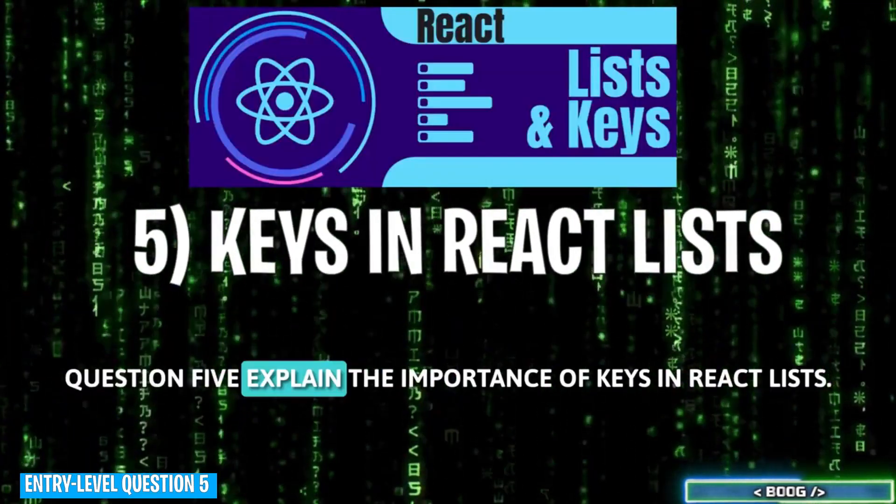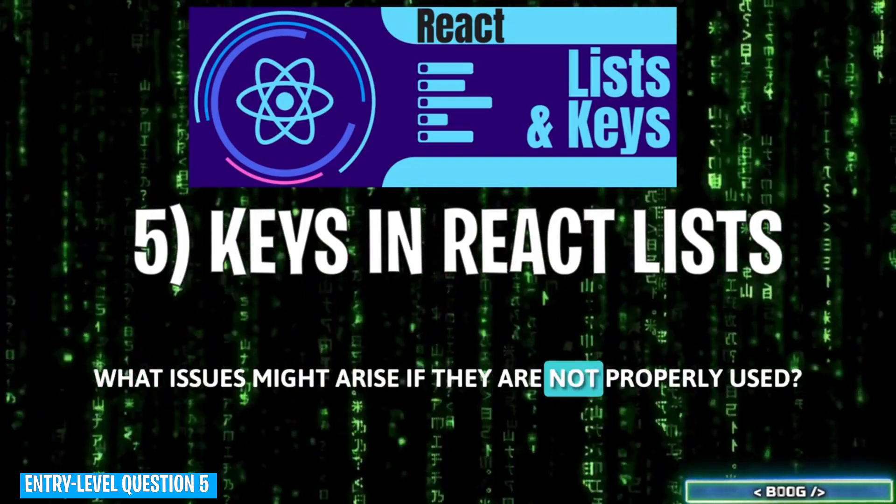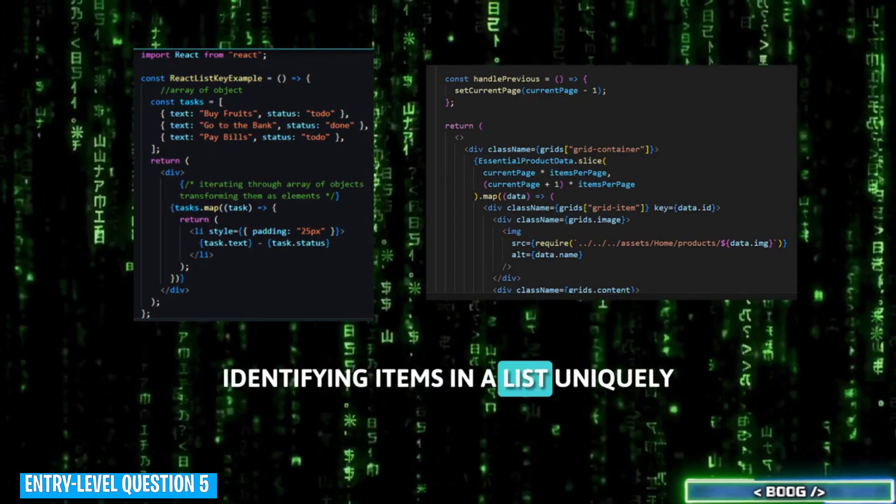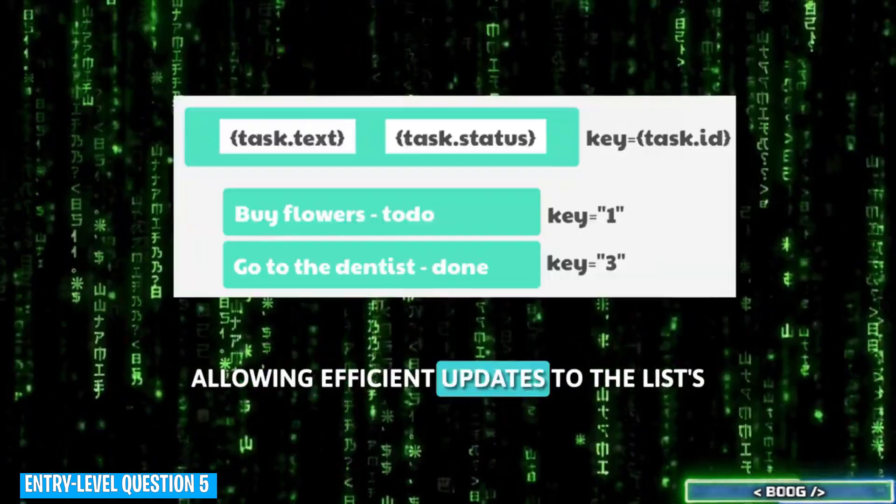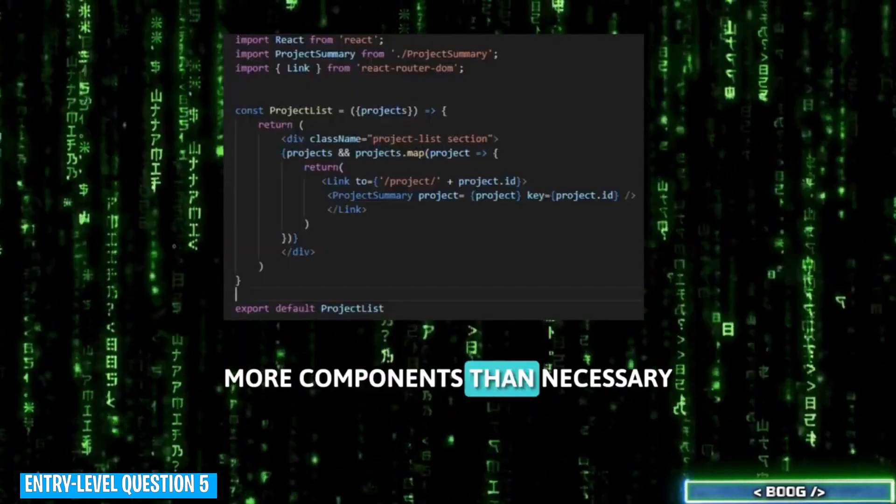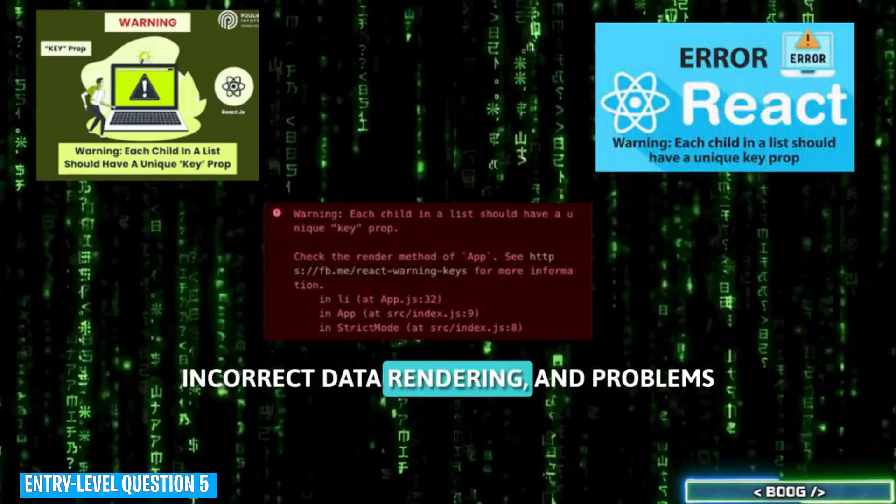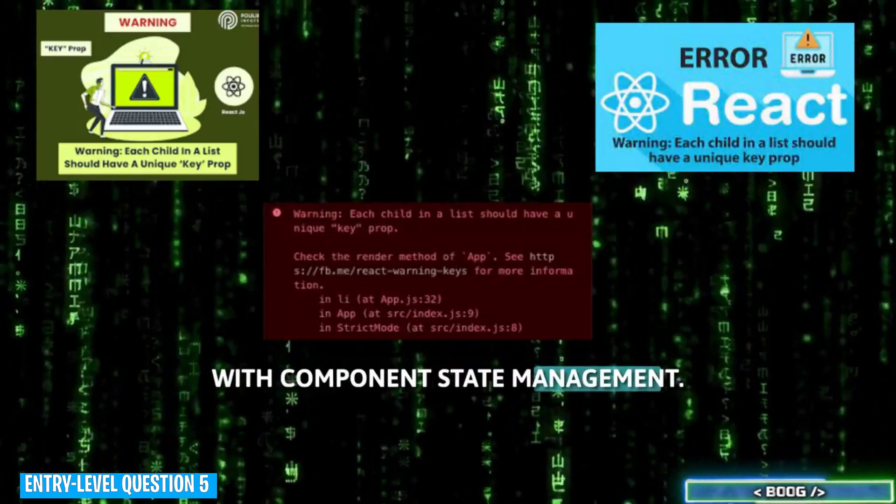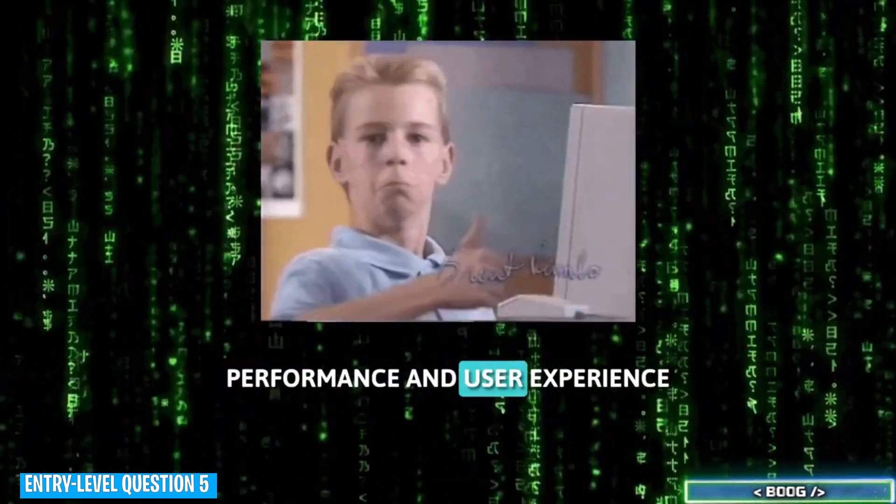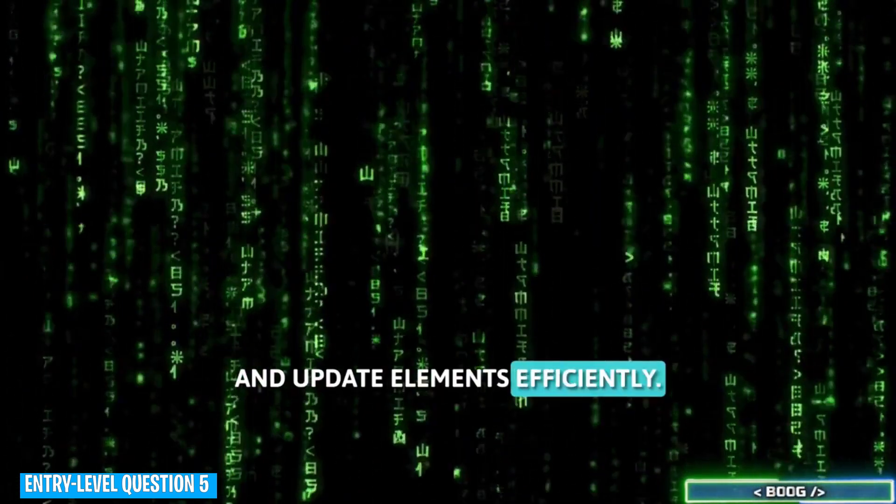Question 5. Explain the importance of keys in React lists. What issues might arise if they are not properly used? Keys are crucial in React for identifying items in a list uniquely, allowing efficient updates to the list's UI. Without unique keys, React may re-render more components than necessary, leading to performance issues, incorrect data rendering, and problems with component state management. Proper use of keys enhances application performance and user experience by ensuring that React can track and update elements efficiently.